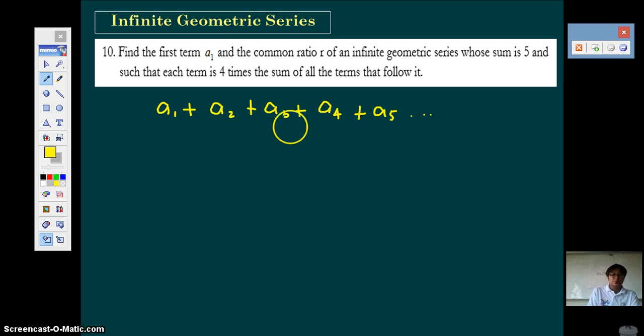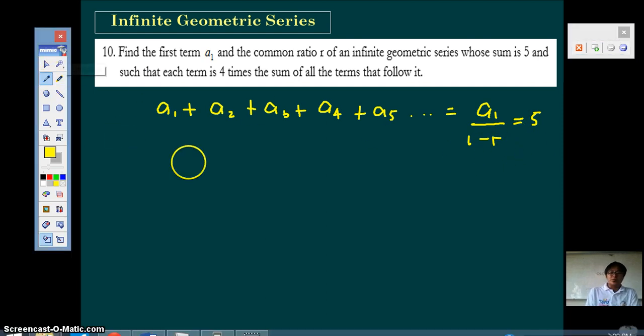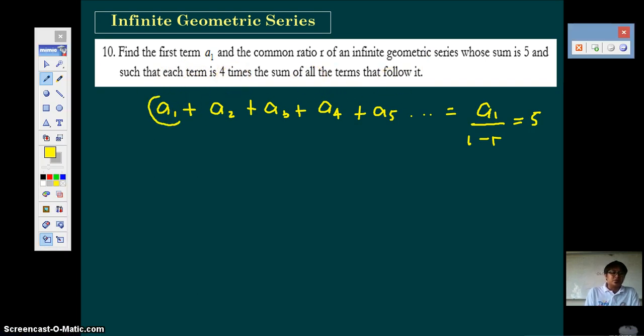So we have a1 plus a2 plus a3 plus a4 plus a5 and so on up to infinity. The problem says that the sum of this series, which of course is equal to the first term a1 divided by 1 minus r, is equal to 5. So you have this equation.